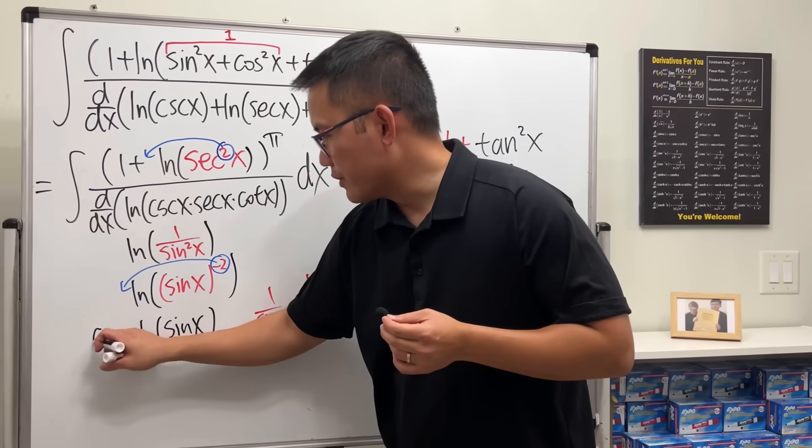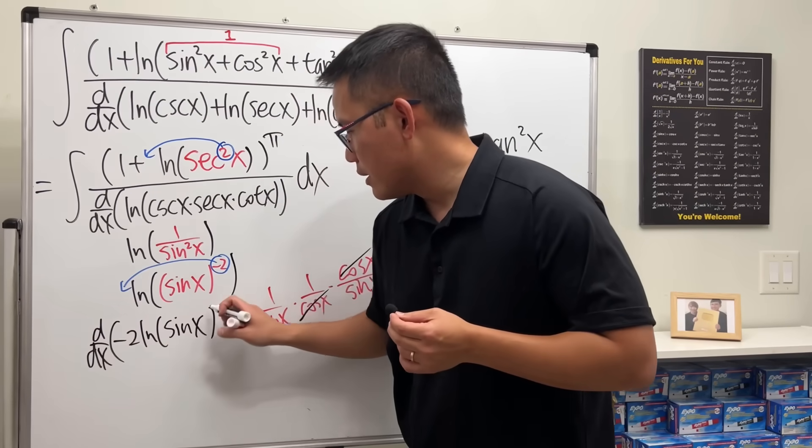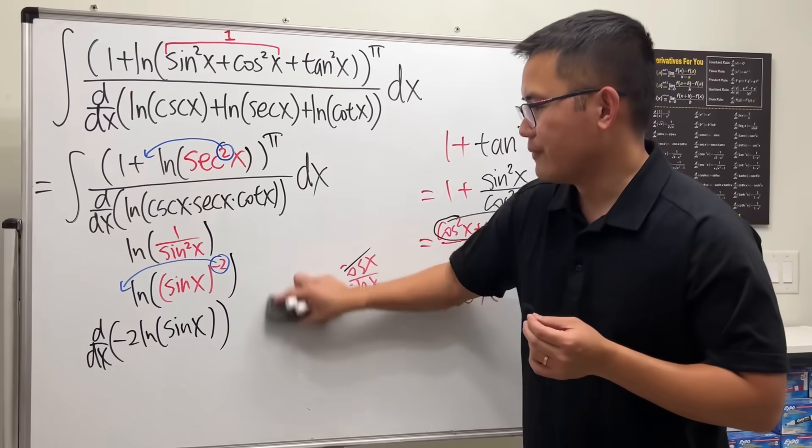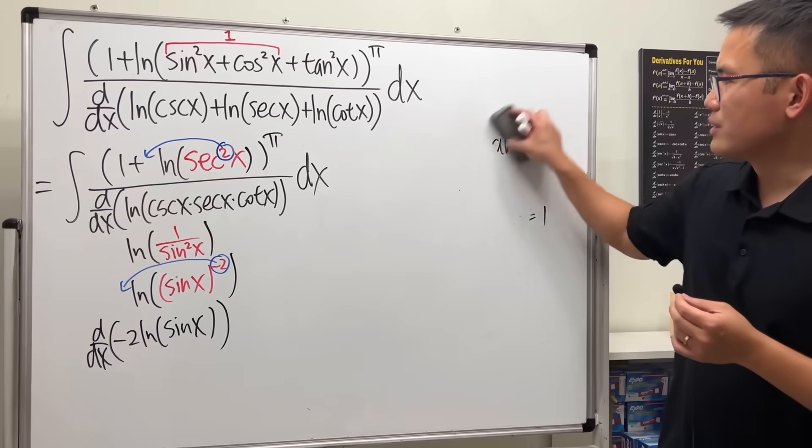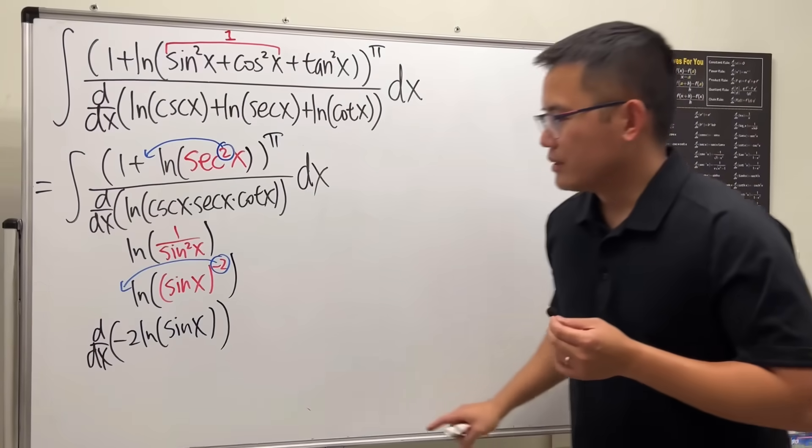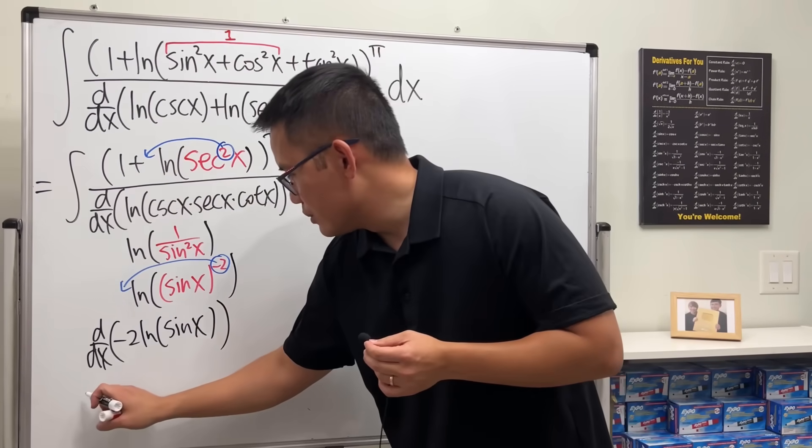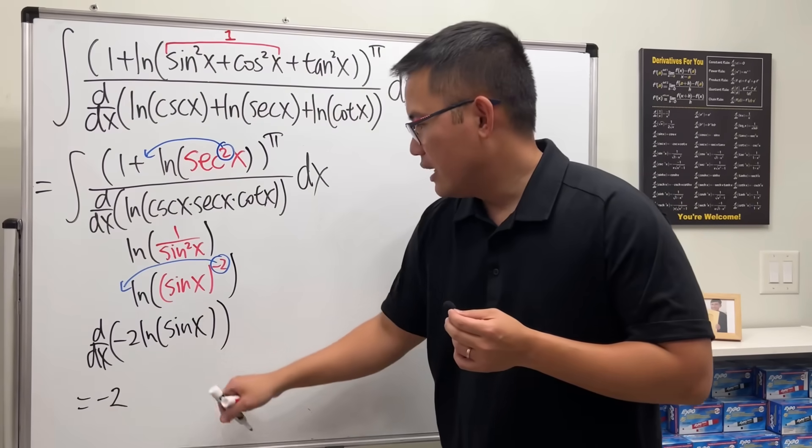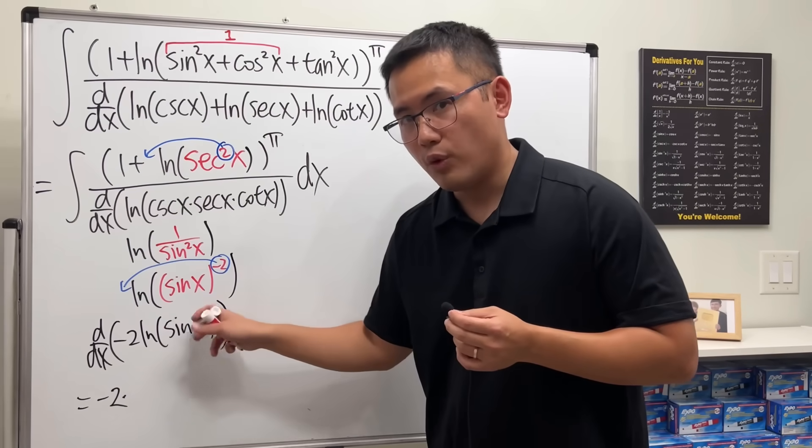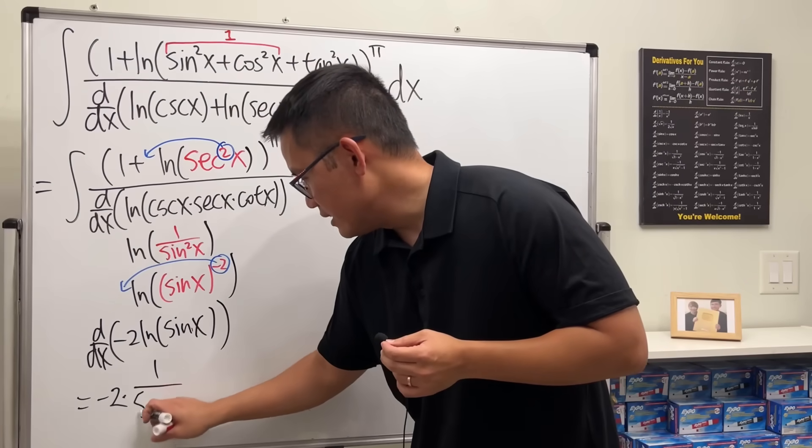And then we do the derivative, right? So, that's what we have. And let's see how it looks like. So, let's just focus on that right here real quick. So, taking the derivative of negative 2, you just keep that, and then derivative of ln is 1 over that, so 1 over sine x, and then use the chain rule, multiply by the derivative of sine, which is cosine x.